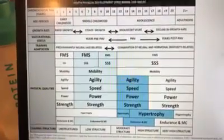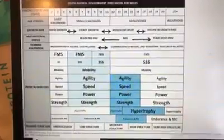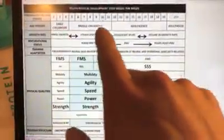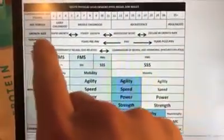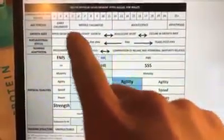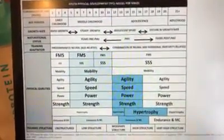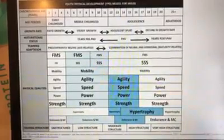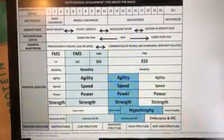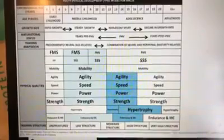This is the youth physical development model for male athletes. You can see bandings around early childhood, middle childhood, and adolescence, along with chronological age. Also denoted are the growth and maturation elements: periods of rapid growth, steady growth, adolescent growth spurt, and then a decline in growth rate. We're taking account of that in some of the training modalities and mechanisms.